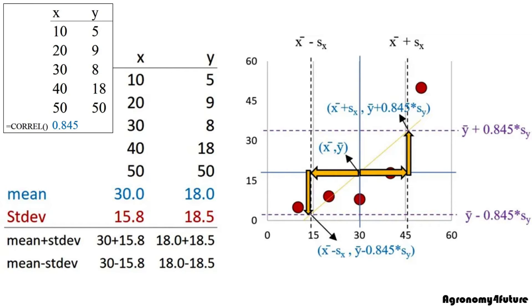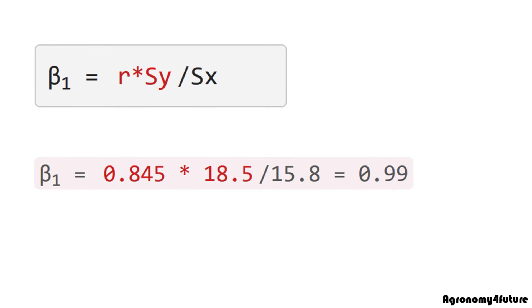That's why correlation is relevant to slope of linear regression. In this case, slope will be 0.99.